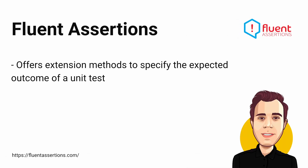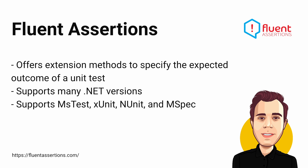Fluent Assertions offers an extensive set of extension methods to specify the expected outcome of a unit test. It supports many .NET versions and testing frameworks including MSTest, xUnit, NUnit, and MSpec. Besides sharing half the name, Fluent Assertions and FluentValidation have nothing in common. However, both are great tools for solving their respective problems. I usually use the default assertion methods when using xUnit, but I prefer Fluent Assertions when working with MSTest.